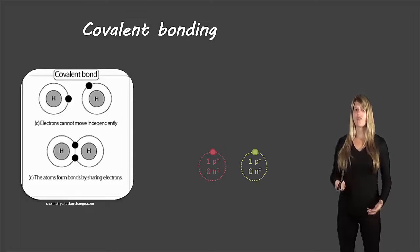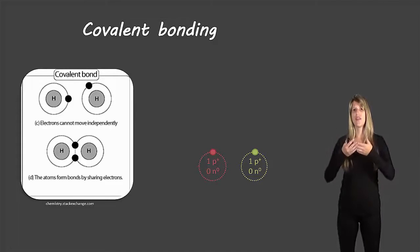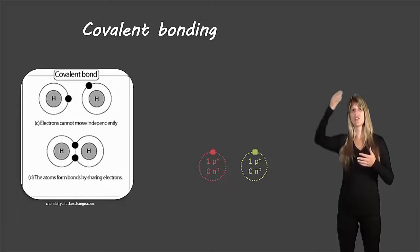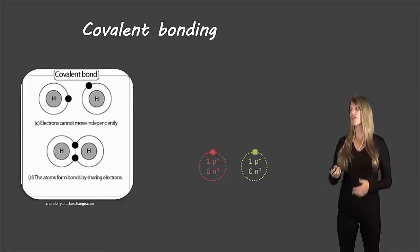Let's start off with what covalent bonding actually is. If you have two atoms that come together and share their electrons in order to feel like they have a full valence shell. Unlike ionic bonding where electrons are actually transferred from one atom to the other, here the electrons are actually shared.